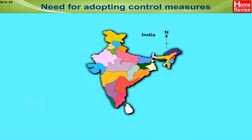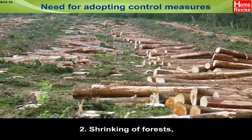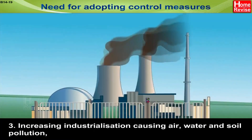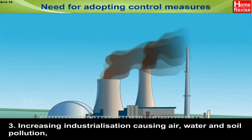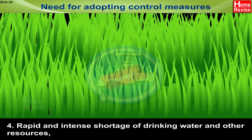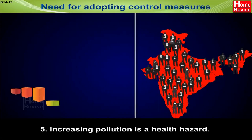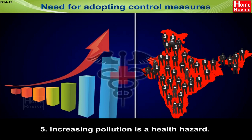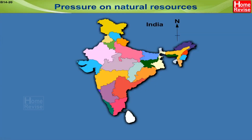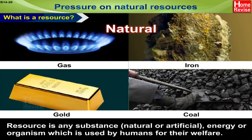Need for adopting control measures: 1. Decreasing open spaces, 2. Shrinking of forests, 3. Increasing industrialization causing air, water and soil pollution, 4. Rapid and intense shortage of drinking water and other resources, 5. Increasing population is a health hazard.